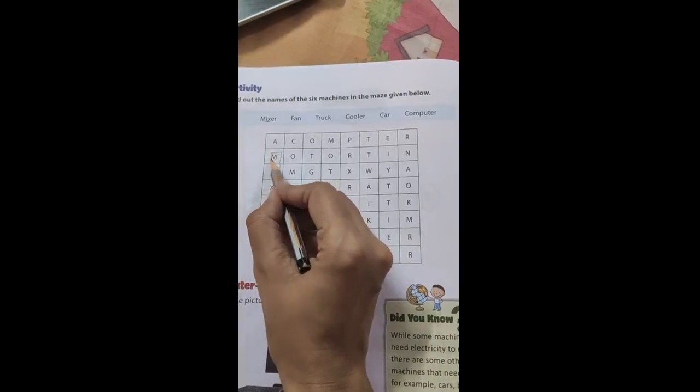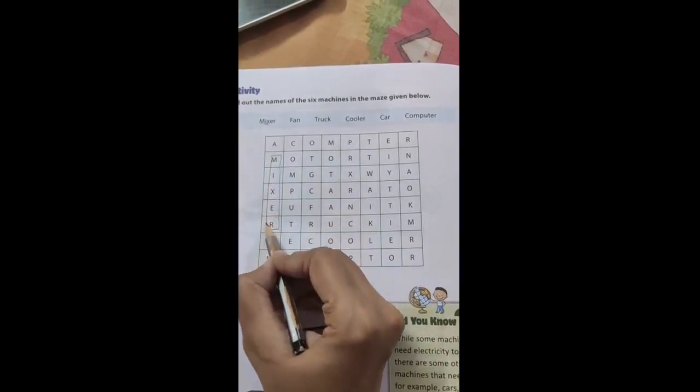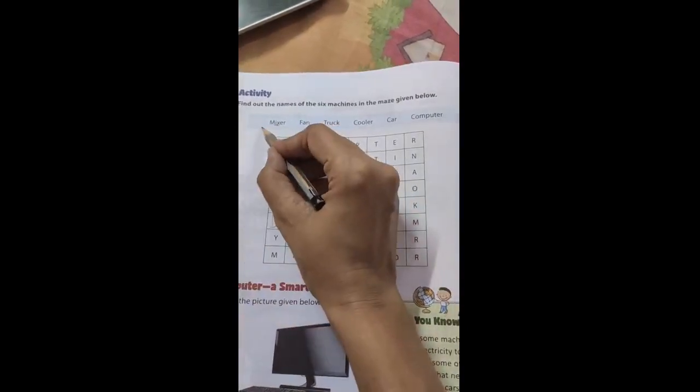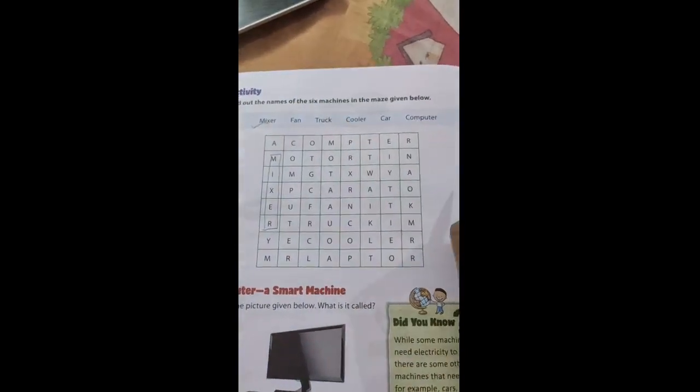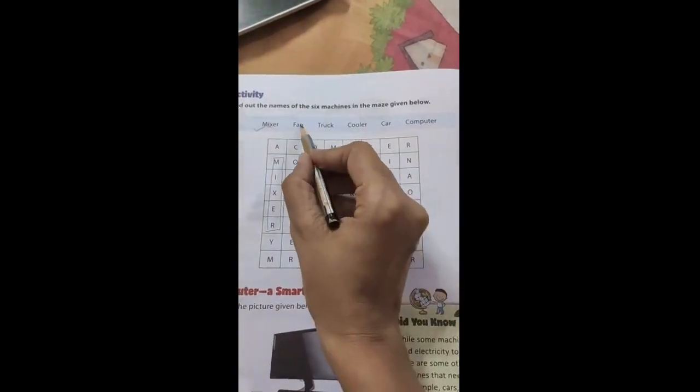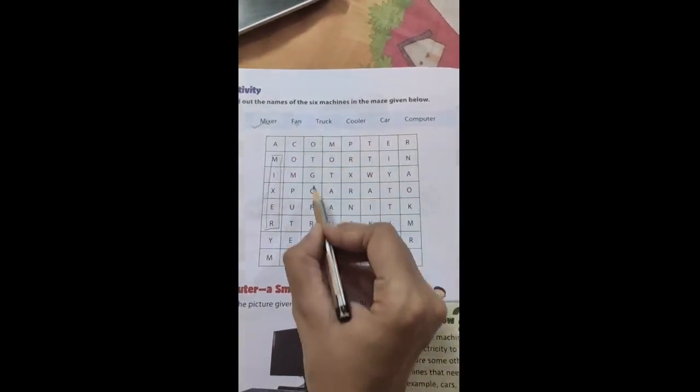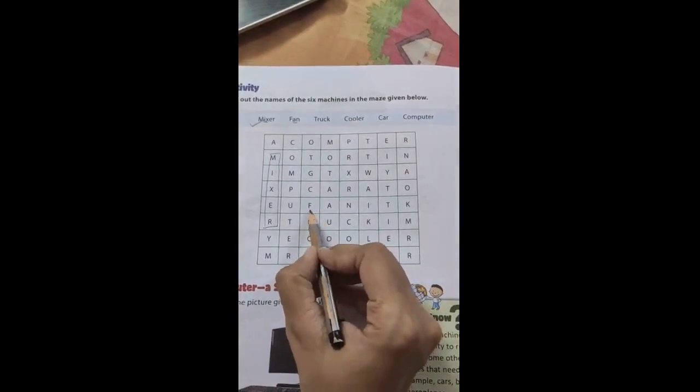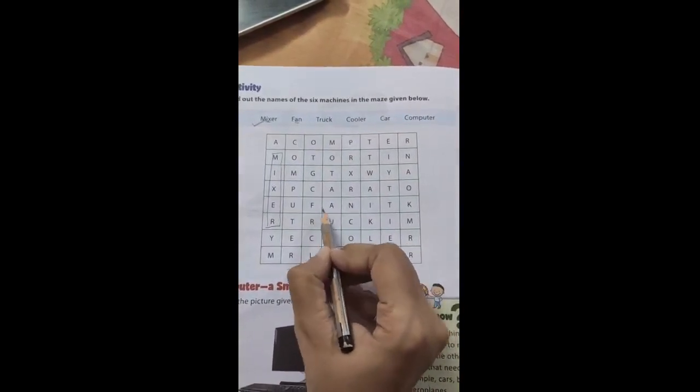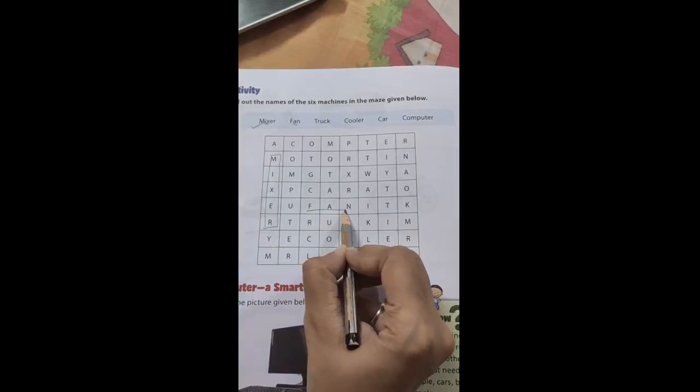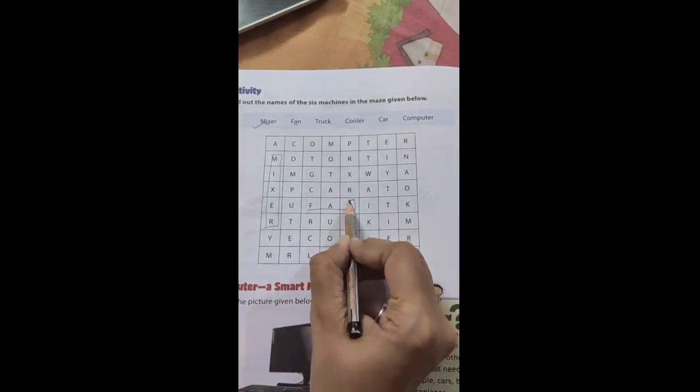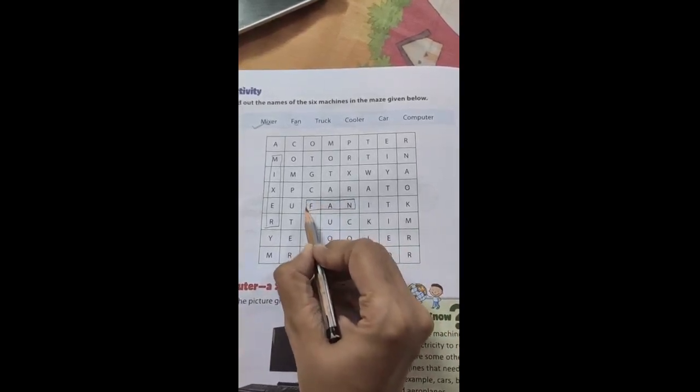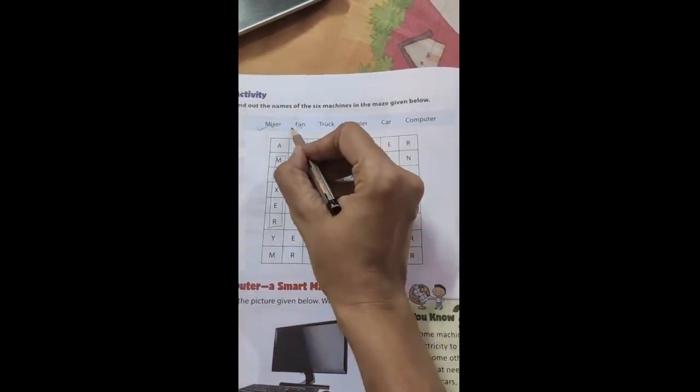The first word here. I hope dear children, you all were also able to get it. Next word is fan. Where is fan? F-A-N. We got it in the fifth row. F-A-N. This is also done.